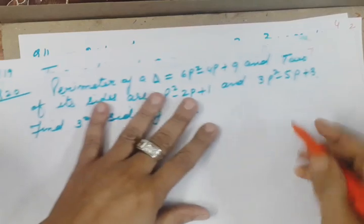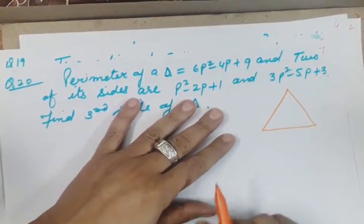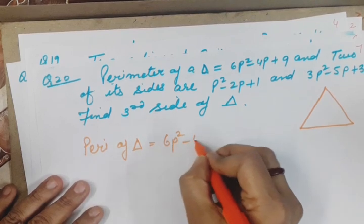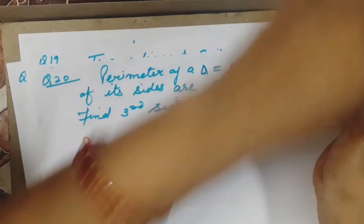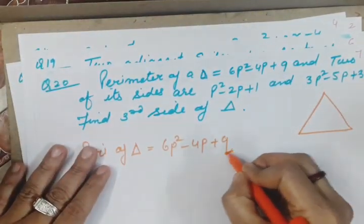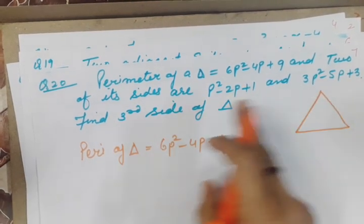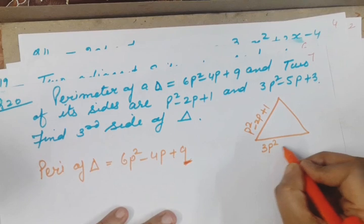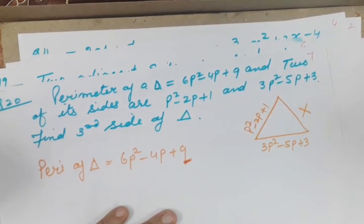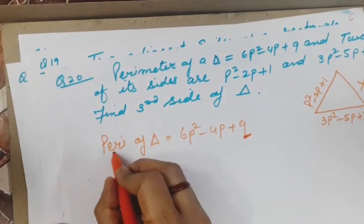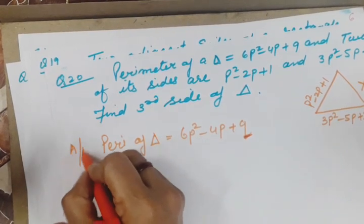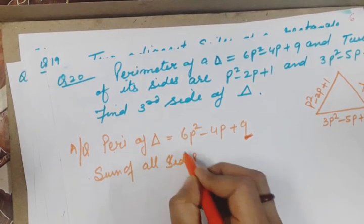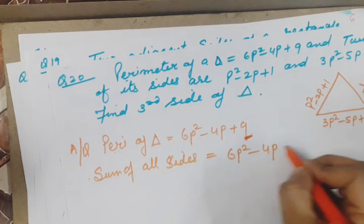Last sum. There is a triangle. Triangle ka perimeter is sum of all sides. Perimeter of triangle is 6p² -4p +9. It's 9, not q. One of its two sides are: p² -2p +1 and 3p² -5p +3. You have to calculate third one. According to question, perimeter of triangle formula is sum of all sides equals 6p² -4p +9. Now here we write all three sides: first side p² -2p +1, second side 3p² -5p +3, and third missing which we assume as x.